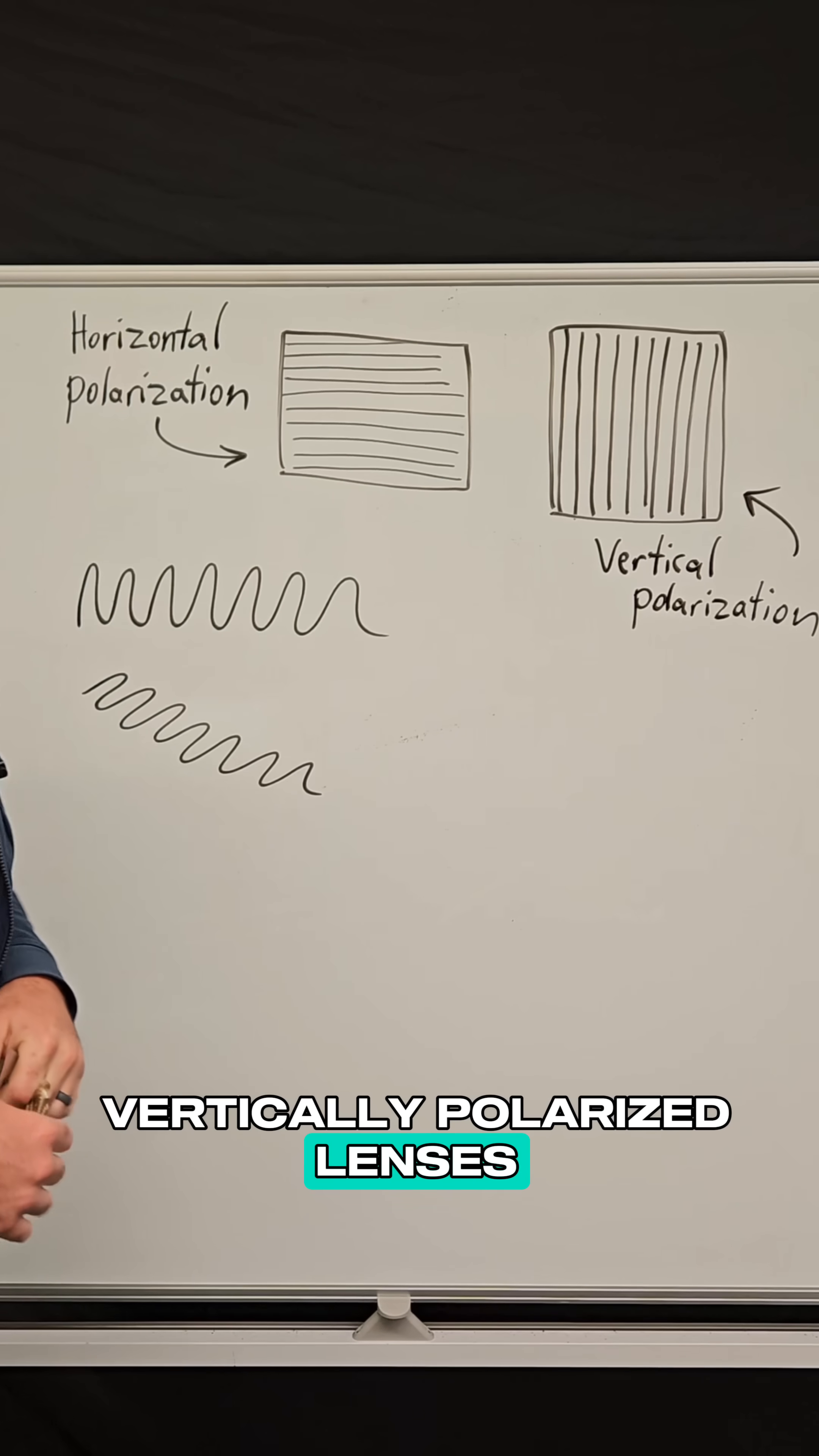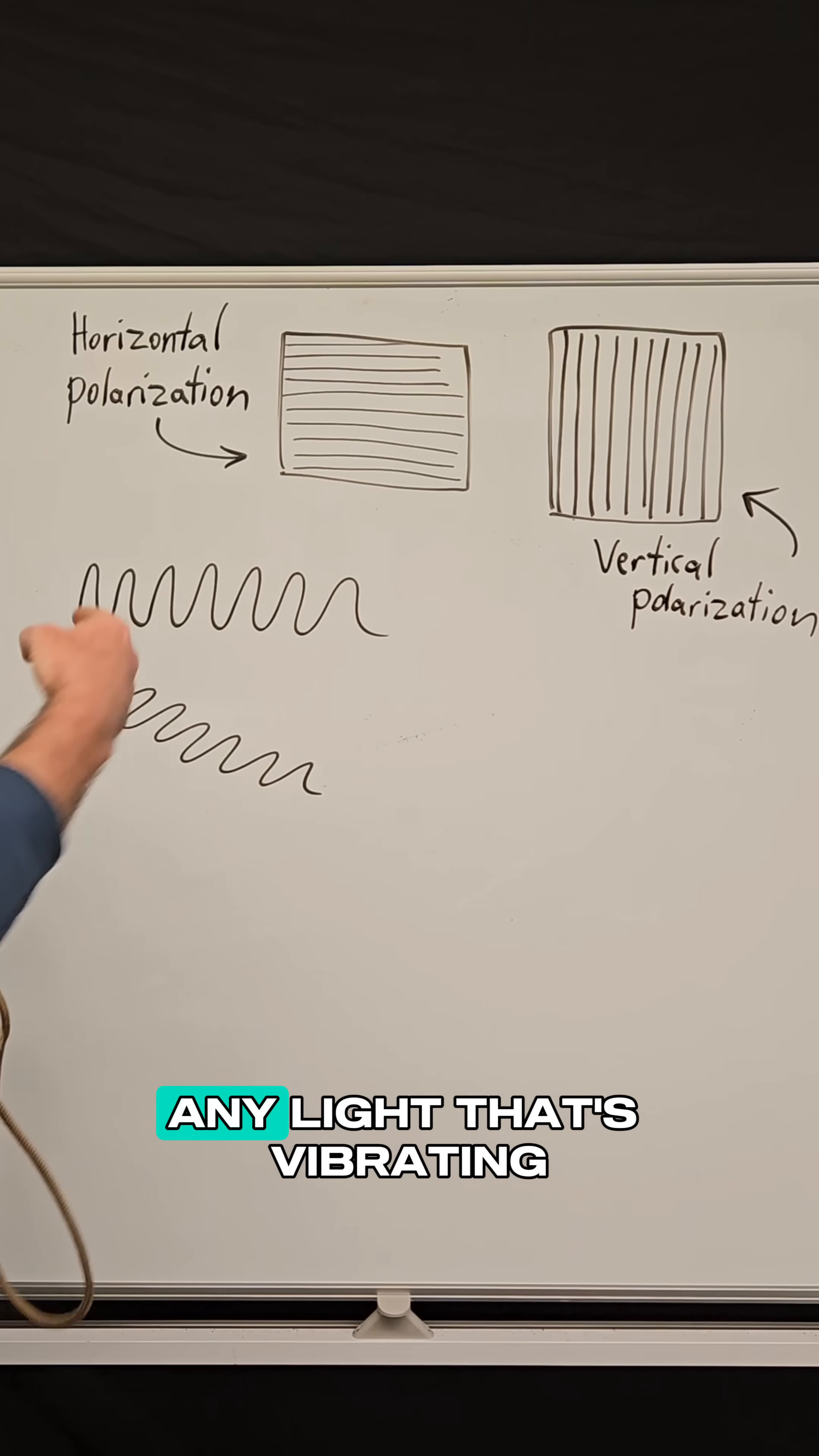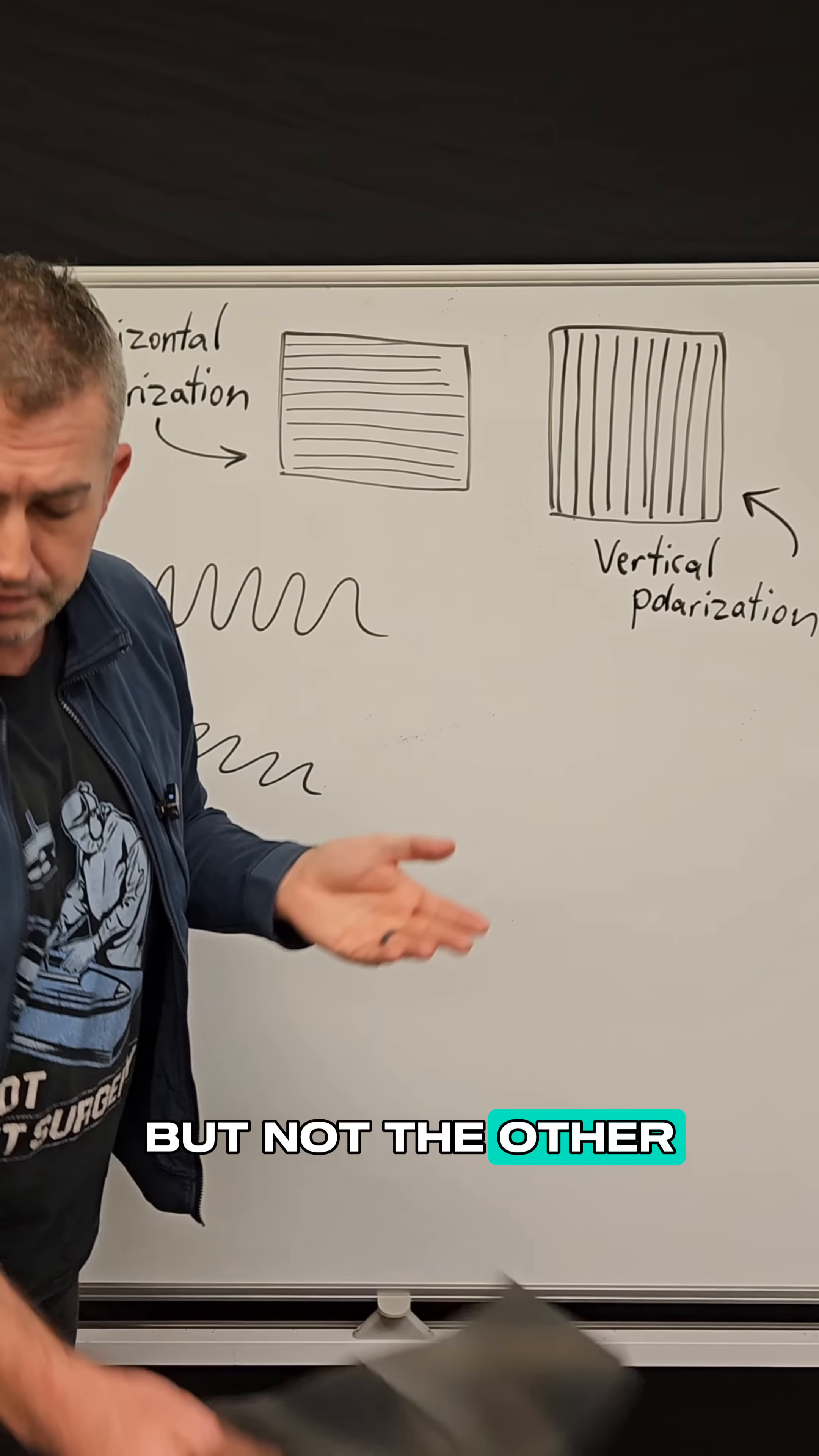But if you have vertically polarized lenses, then those vertically oscillating light waves are able to get through. Similarly with horizontal polarization, any light that's vibrating in this direction is going to be able to get through. So this allows 50% of the light to get through because it's allowing one direction to enter but not the other.